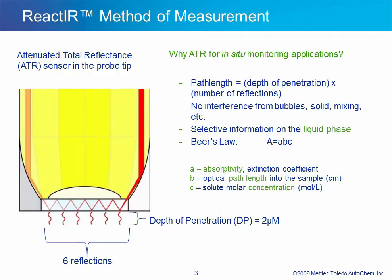The technique that we use in our sampling technology is attenuated total reflectance, also known as ATR. ATR works on the principle of Snell's Law, where each reflection is actually an interrogation point of the sample matrix. At each interrogation point, the infrared radiation penetrates into the reaction matrix only on the order of approximately 2 micrometers. Therefore, the path length is equal to the depth of penetration times the number of reflections. Since the infrared radiation only penetrates such a short distance, bubbles and solids do not affect the measurement. In most cases, the system will not be able to observe the solids in the sample matrix. This is quite different from transmission-based techniques, where bubbles and particulates will cause interferences. In essence, the React-IR is sampling the liquid phase of the reaction mixture.